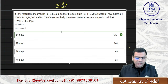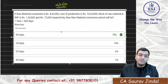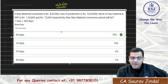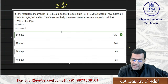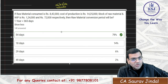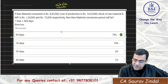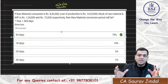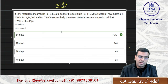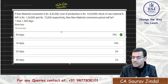So what this question was — this is a very simple question, and some of the information given was beyond what was required. If raw material consumption is ₹8,42,000, cost of production is ₹14,25,000, stock of raw material and WIP is ₹1,24,000 and ₹72,000 respectively, then the raw material conversion period will be — that is, in how many days you are able to convert that stock. One year is assumed to be 365 days.